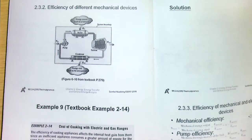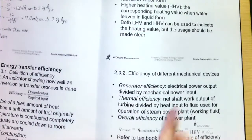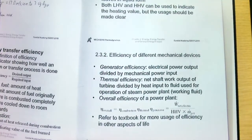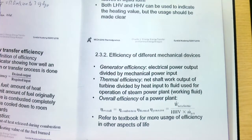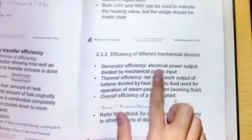The generator is used to convert mechanical energy to electrical energy. The generator efficiency is defined as the electrical power output divided by the mechanical power input. You need to understand the concept rather than just memorize it — the input should be the mechanical power input and the output should be the electrical power output, which is the desired output because it is the purpose of the generator.